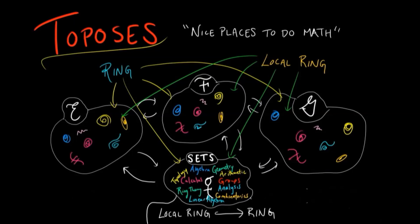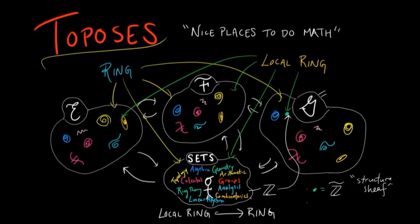But if we consider constructions which allow us to step outside a given topos, we see there is a universal local ring construction from rings. However, it just doesn't live in the same topos.